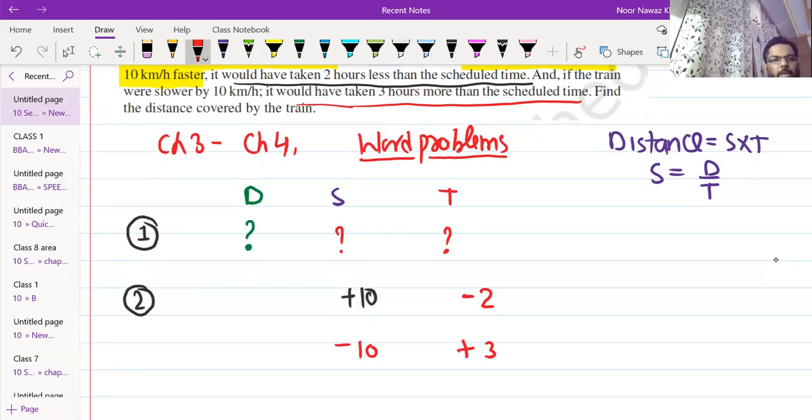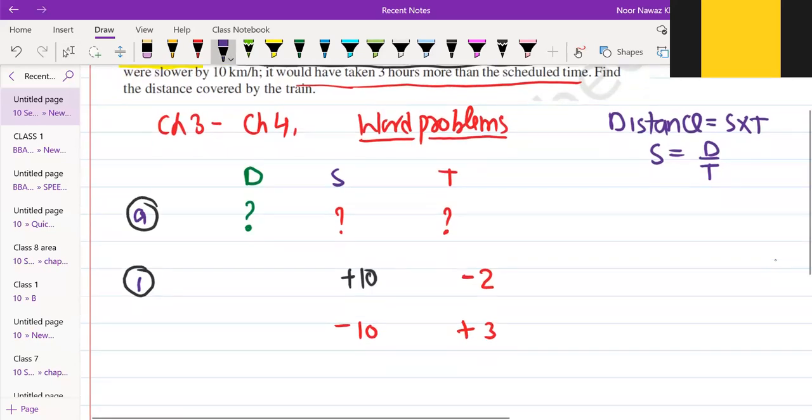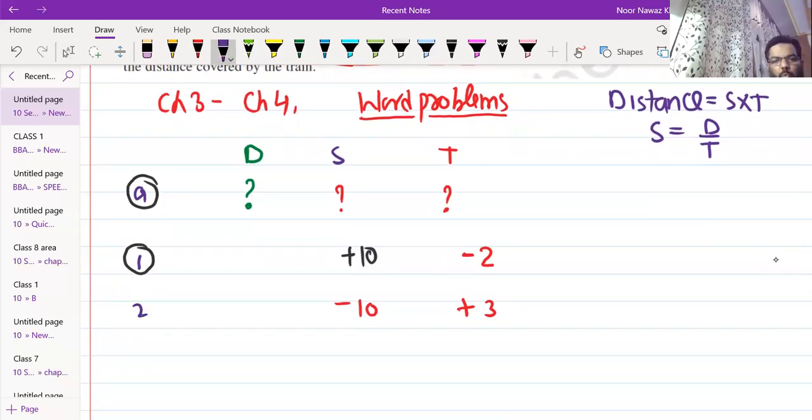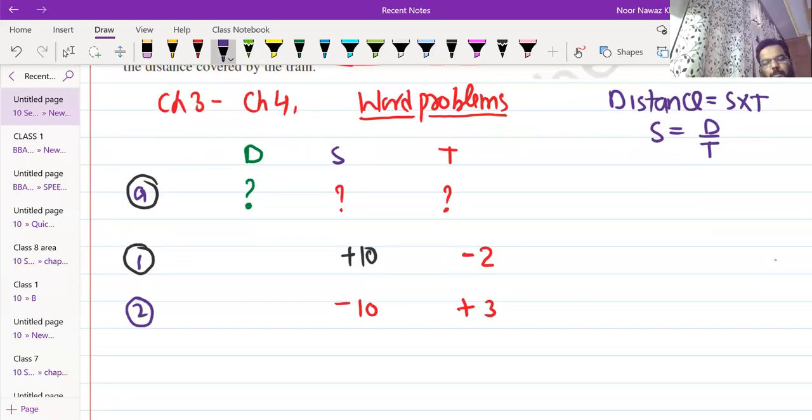It would have taken three hours more than the scheduled time. Then time will be three hours more. This is our case. Everyone who has information, will it come in or not? Now we have not written anything. General, and case one when the speed is fast. And case two when the speed is slow.